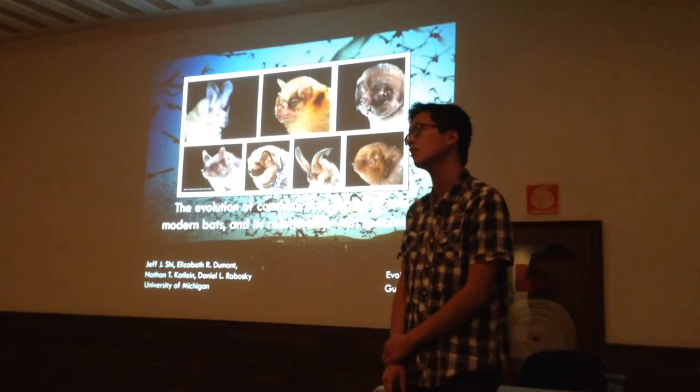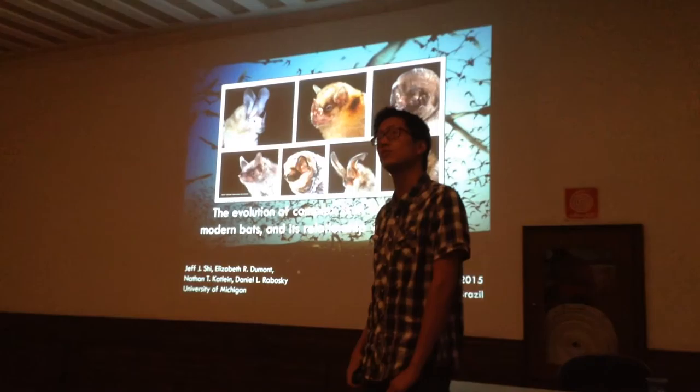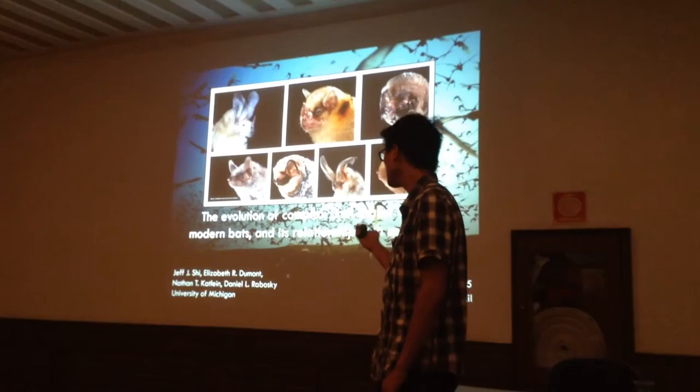I'm Ruff Shee, I'm at the University of Michigan, a third year PhD student working with Dan Raboski and Catherine Badgley. I'm here to present to you today about the evolution of complex skull shape across modern bats and its relationship with speciation. I'd like to specifically thank my committee member Ed Stott and my undergraduate research assistant Nathan Catline for a lot of the morphological data you'll see presented today.